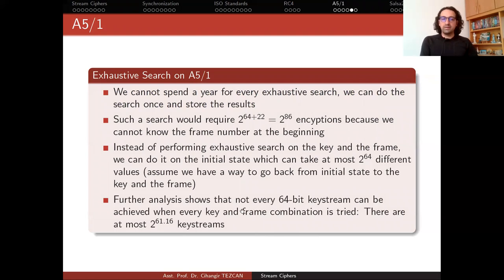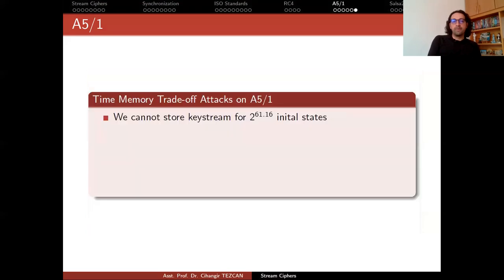So further analysis actually in the literature showed that you cannot have 2 to the 64 different initial states because of the structure of the cipher. However, even if you choose this many keys and this many frames, at the end, the key streams that you can produce are actually 2 to the 64, which actually reduces the exhaustive search attack by a factor of 8, which is a good thing. But actually, still we cannot perform an exhaustive search attack once and store them in a table so that we can repeat the attack in the future, because we cannot store key stream for 2 to the 61 or 2 to the 64 initial states because this would be millions of petabytes.